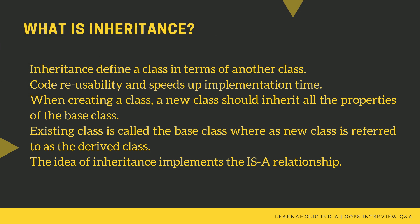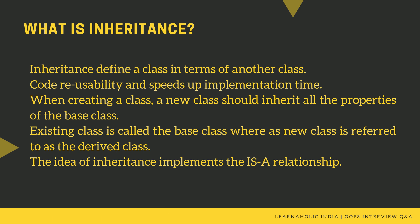The next commonly asked question is: what is inheritance? Inheritance defines a class in terms of another class. Inheritance provides code reusability and speeds up implementation time. When writing a new class, it should inherit all the properties of the base class. The existing class is called the base class, whereas the new class is referred to as the derived class. The idea of inheritance implements the 'is-a' relationship. In simple words, inheritance is a mechanism in which one class acquires the properties of another class. For example, a child inherits all the properties of his or her parents. With inheritance, we can reuse the fields and methods of the existing class, which facilitates reusability — an important concept in object oriented programming.